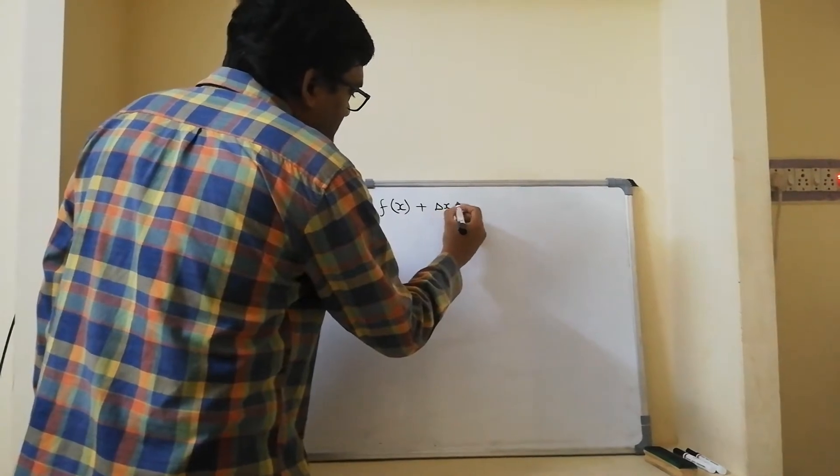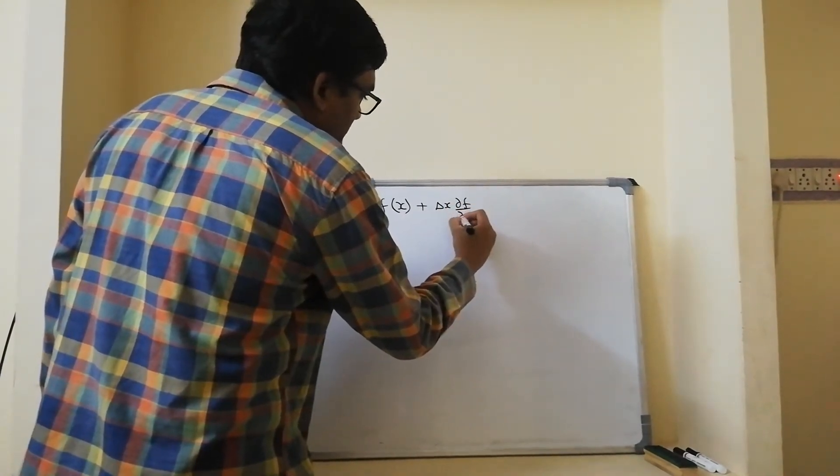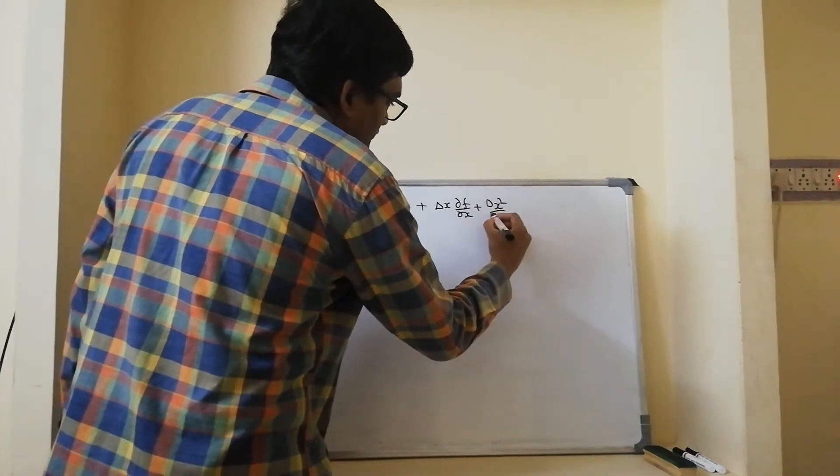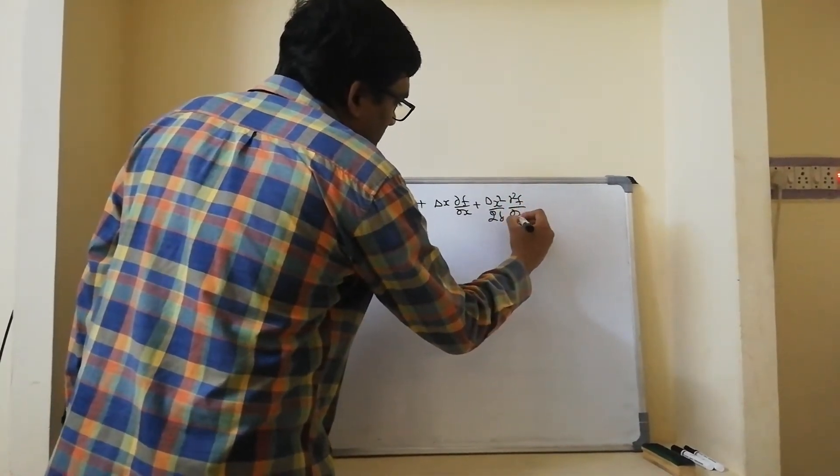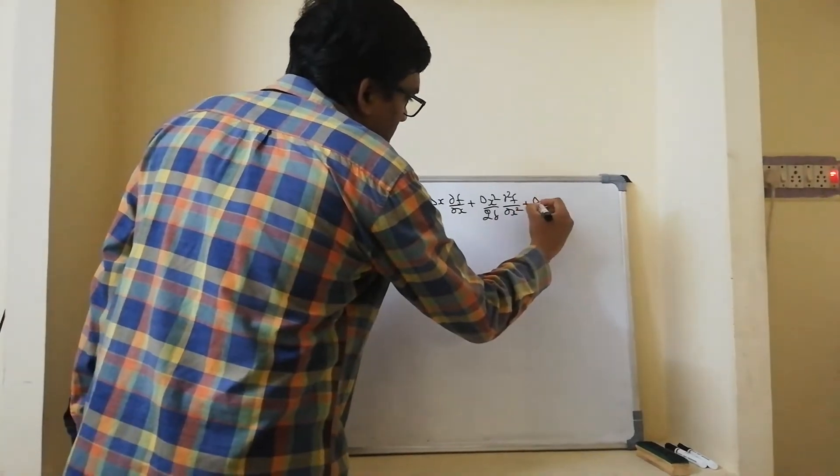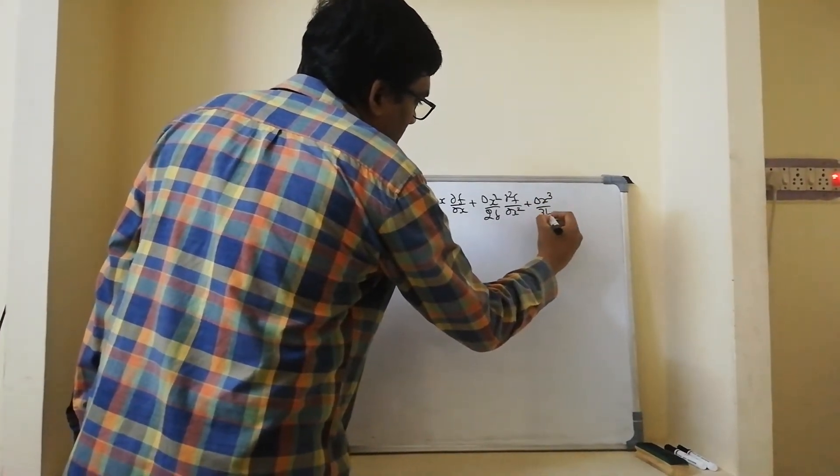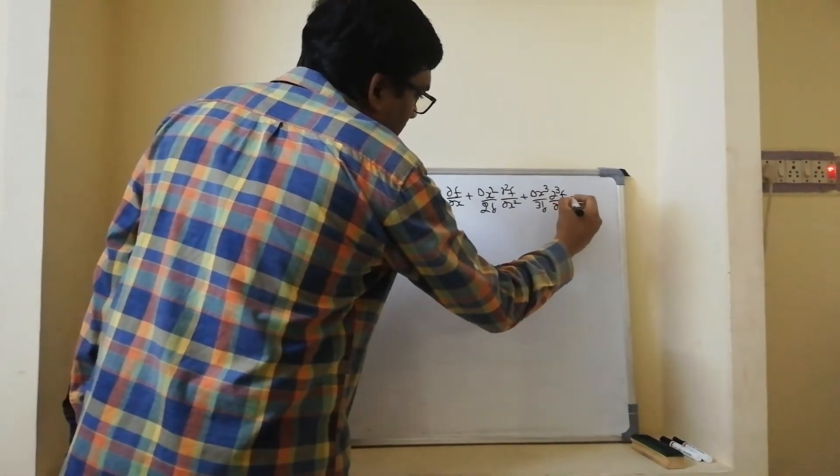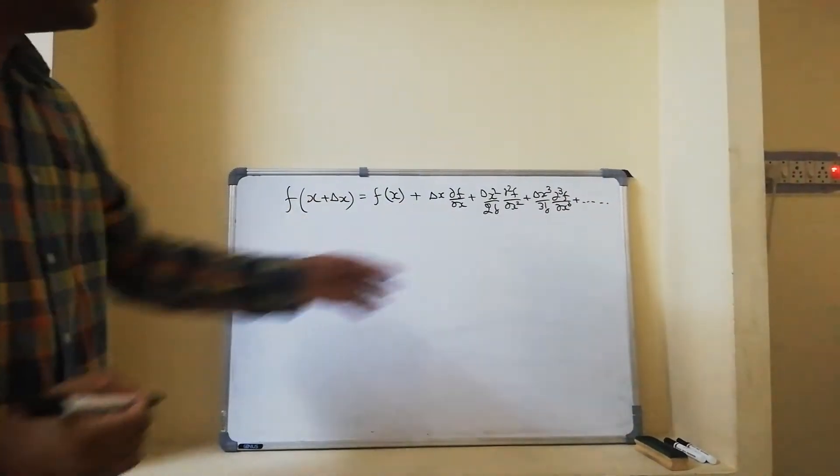I have delta x times dou f by dou x plus delta x square times 2 factorial, dou square f by dou x square plus delta x cube by 3 factorial, the third partial derivative of f and so on. This goes on till infinity.